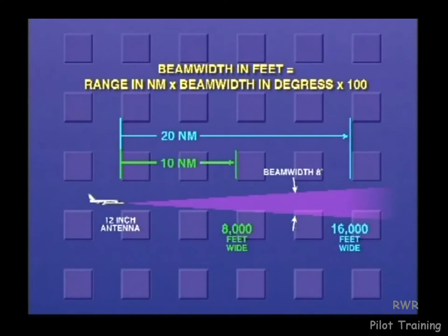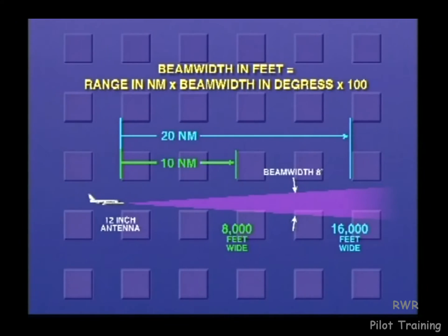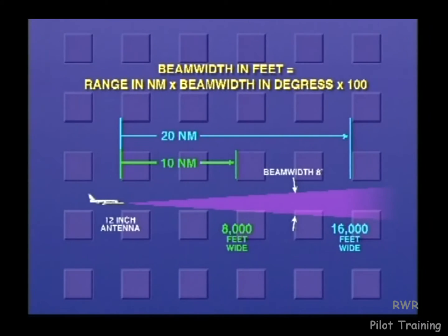Because the radar beam is just like a flashlight's beam, the radar beam's diameter enlarges as it travels outward away from the antenna. For those mathematically inclined, the beam width diameter can be calculated at a given range using the following equation: beam width in feet equals the range in nautical miles times the beam width in degrees times 100. As an example, if the range is 10 nautical miles and the beam width is 8 degrees, the beam is 8,000 feet wide — 10 times 8 times 100 equals 8,000 feet. At 20 miles, it's 16,000 feet wide. While this is good background information, proper use of a weather radar requires no calculations at all.